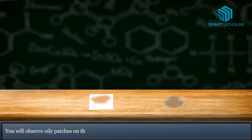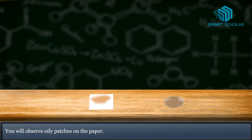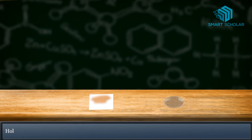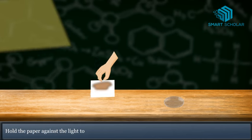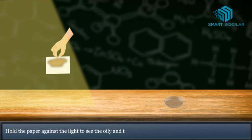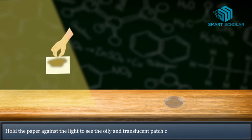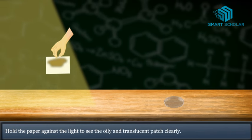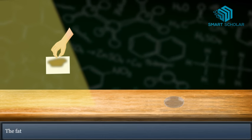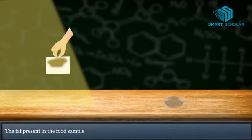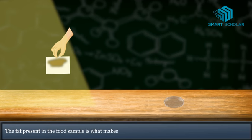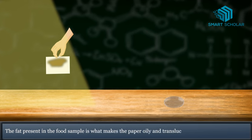You will observe oily patches on the paper. Hold the paper against the light to see the oily and translucent patch clearly. The fat present in the food sample is what makes the paper oily and translucent.